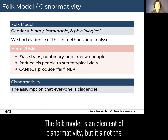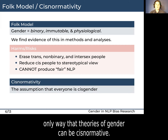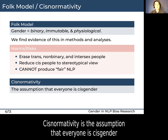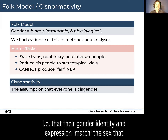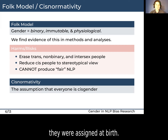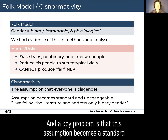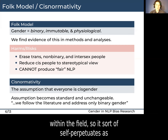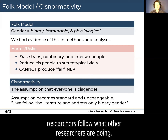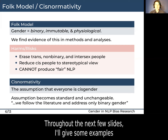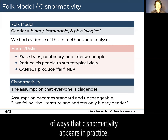The folk model is an element of cisnormativity, but it's not the only way that theories of gender can be cisnormative. Cisnormativity is the assumption that everyone is cisgender — i.e., that their gender identity and expression match the sex that they were assigned at birth. A key problem is that this assumption becomes a standard within the field, so it sort of self-perpetuates as researchers follow what other researchers are doing. Throughout the next few slides, I'll give some examples of ways that cisnormativity appears in practice.